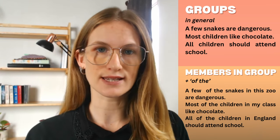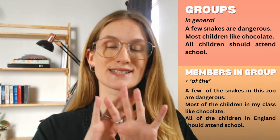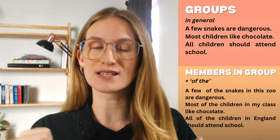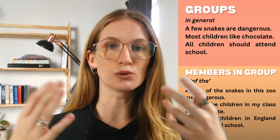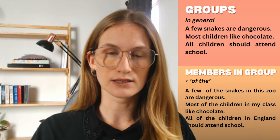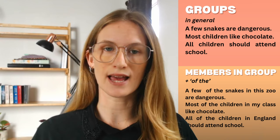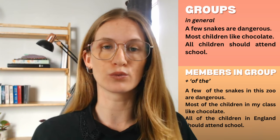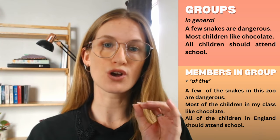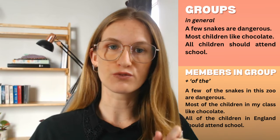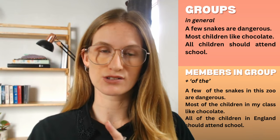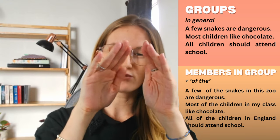Now let's move on to something more intermediate: talking about a group in general versus members of a group. For example: 'few snakes are dangerous' — we're talking about snakes in general, and maybe a few of all snakes in the world are dangerous. 'Most children like chocolate' — about 90 percent of children in general. 'All children should attend school' — children as a group all over the world. But when we use 'of the,' we're referring to a specific amount within a bigger group. Few of the snakes in the zoo are dangerous — specific to that zoo.